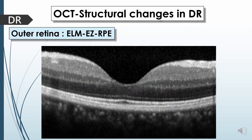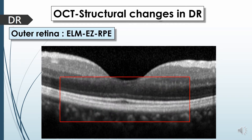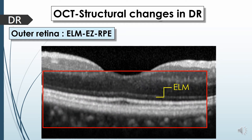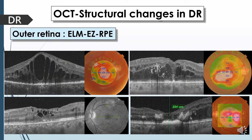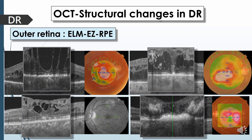Proper evaluation of the outer retinal layers — the external limiting membrane, ellipsoid zone, and retinal pigment epithelium — is very important as a prognostic indicator in cases of diabetic macular edema. Discontinuation and interruption of these layers carries a poor prognostic value and is considered one of the causes of permanent visual loss in DME.